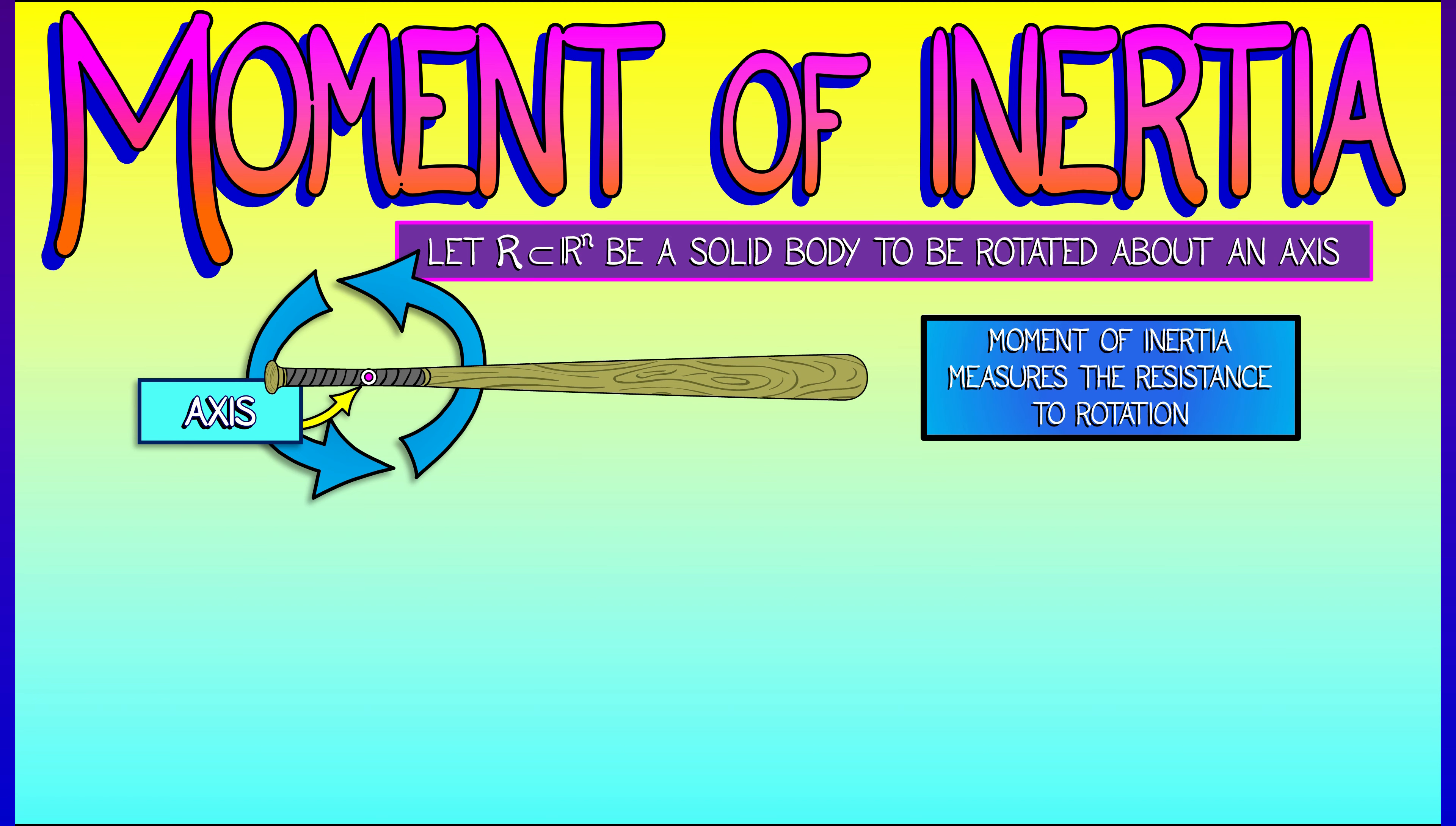So let's move on to recall the definition of the moment of inertia. Let's say you have some solid body, capital R, sitting inside of R^n. n is typically going to be two or three, and you want to rotate this about an axis.